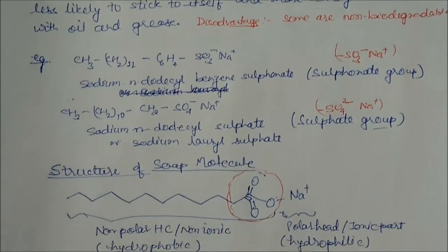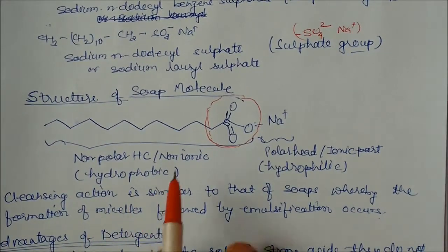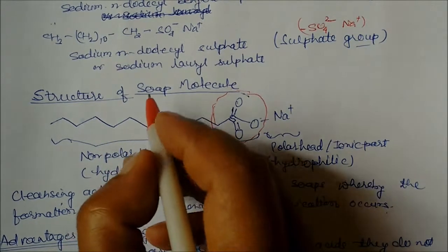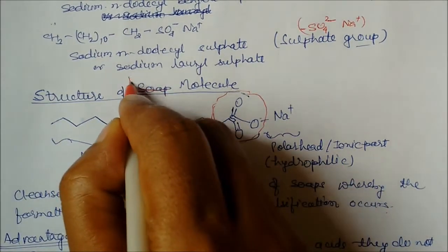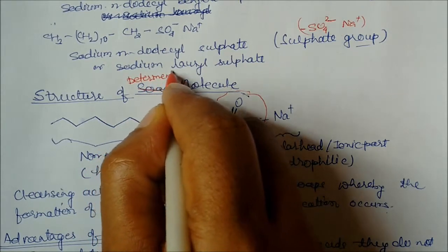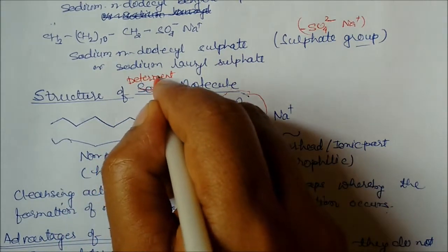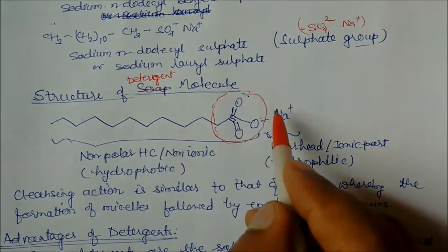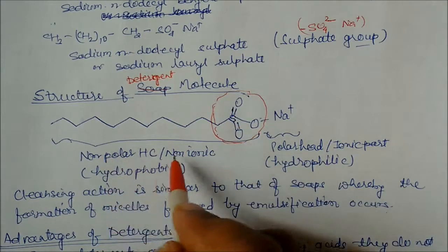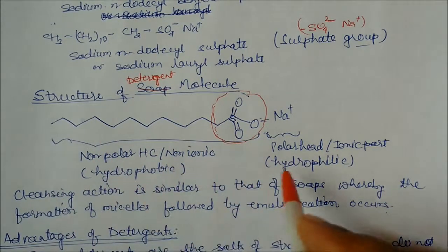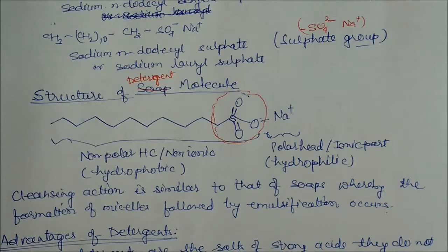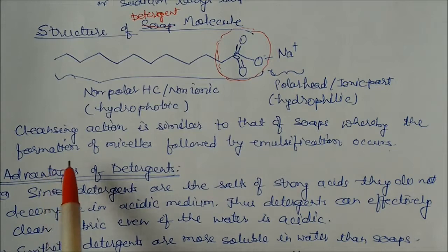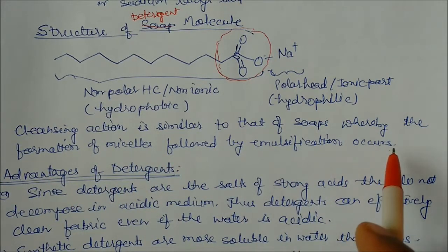The structure of the detergent molecule is simple. Similar to a soap molecule, a detergent molecule has a long hydrocarbon chain. One end is the polar head and the other is the non-polar, non-ionic part. This part is hydrophobic — similar to a soap molecule.